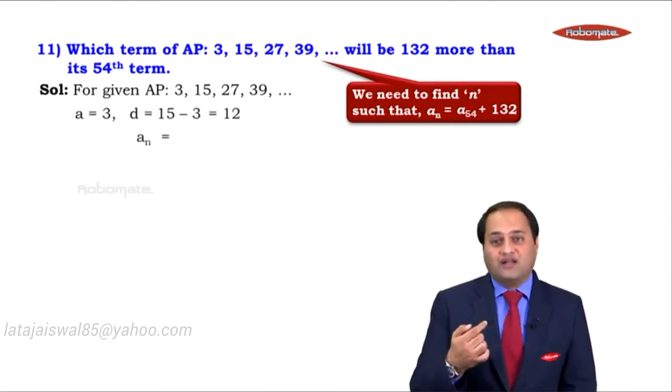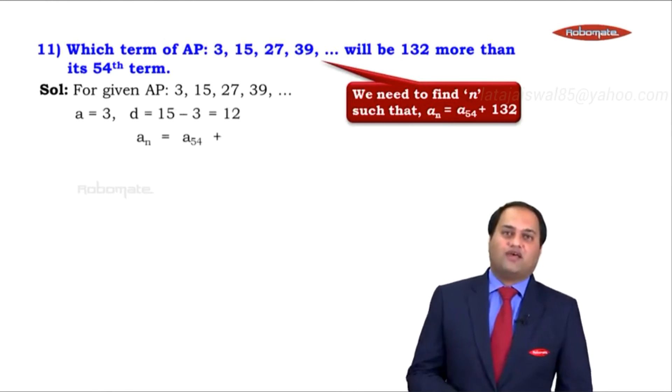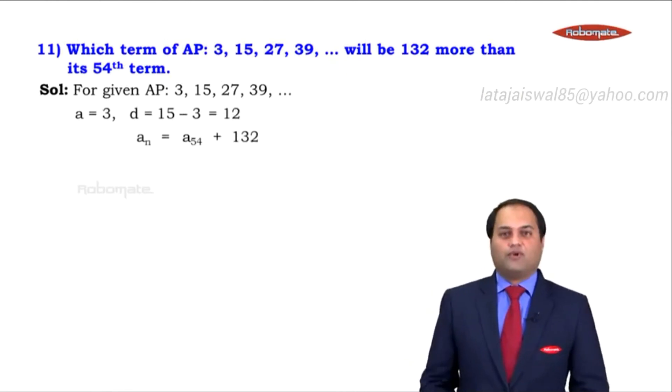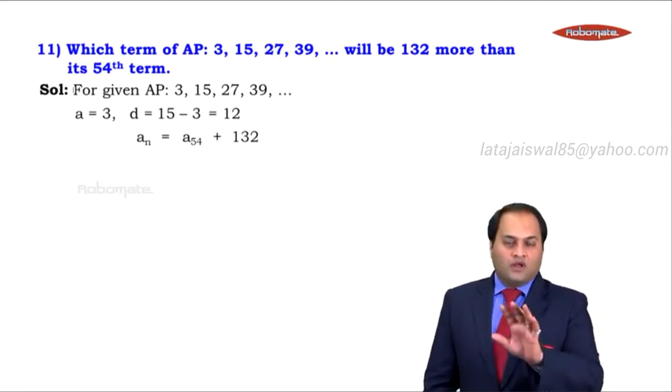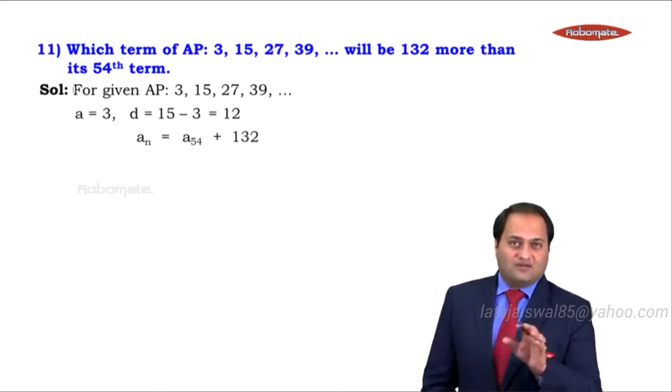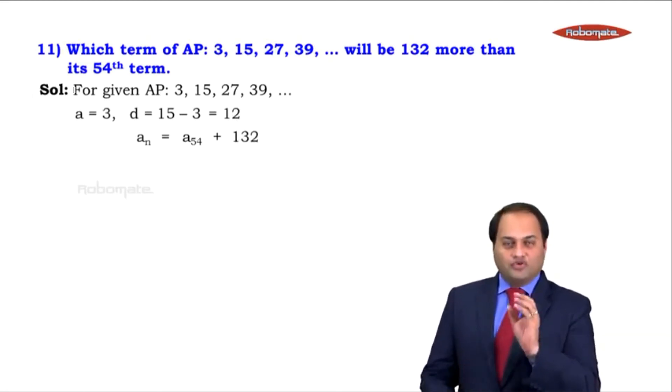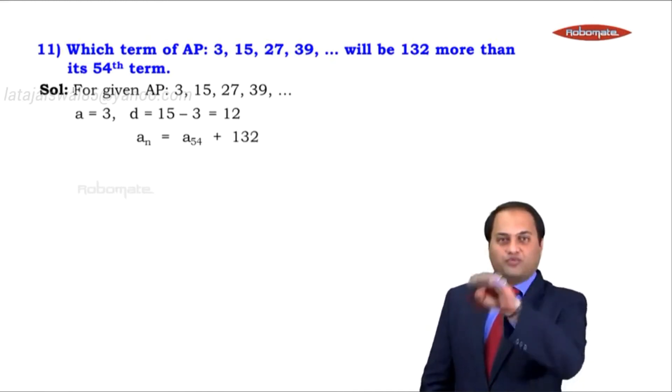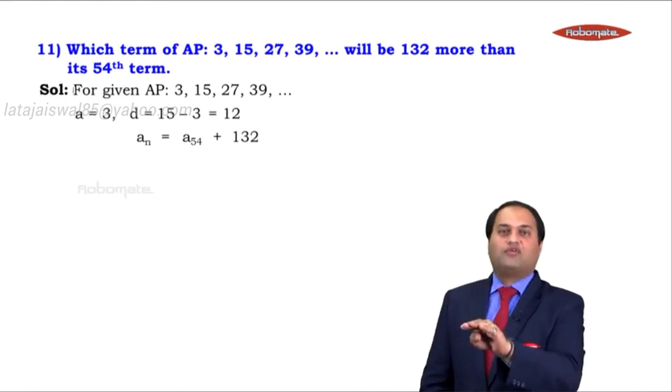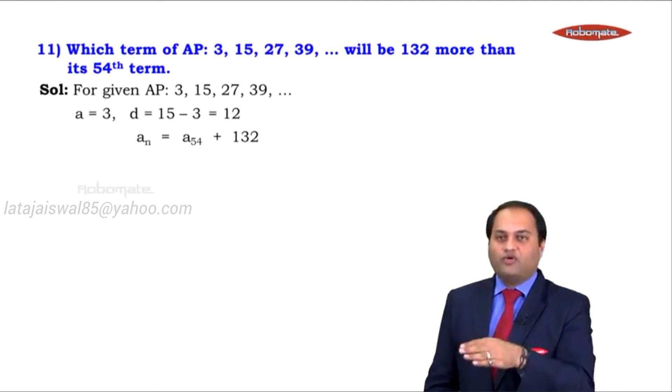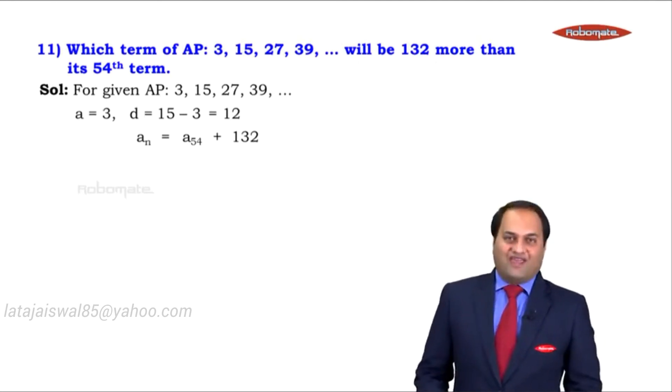We know a, we know d, and we know the condition related to an, that is an is equal to a54 plus 132. You remember the previous sums, those exceeds sums? What we used to do? In that equation itself, used to put their values, an, a54, put their formula.